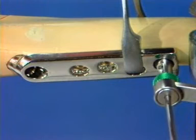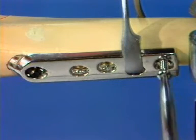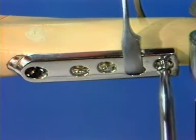The DHS plate is then attached to the shaft of the femur with four screws drilled in the neutral position.